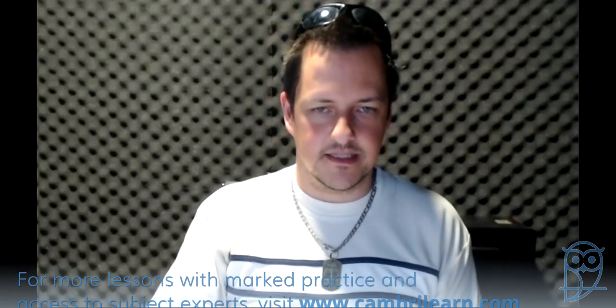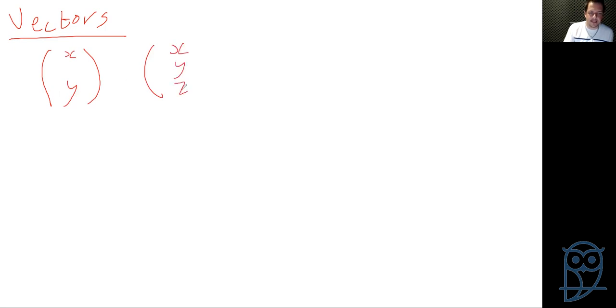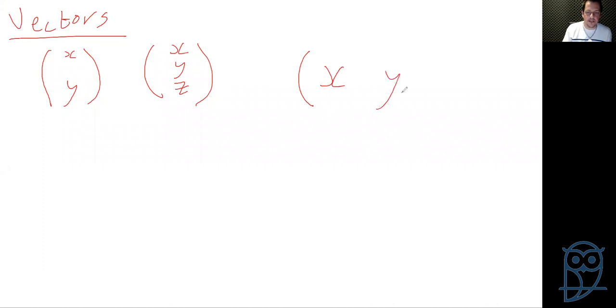Alright, so let us start with some vectors. Here is my whiteboard. With vectors, we know that you can generally write it as a column vector of elements. So it could be x and y, or it could be x, y, z if it's a three-dimensional vector, or you could have longer vectors. Most often they'll be written vertically. You might sometimes find them written horizontally — that is also a vector and acceptable, however it is definitely less common.